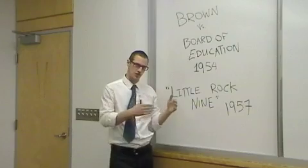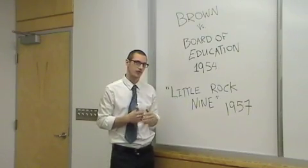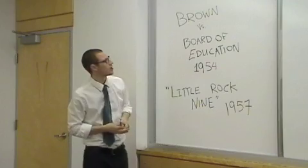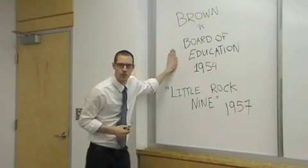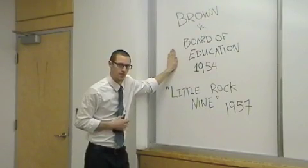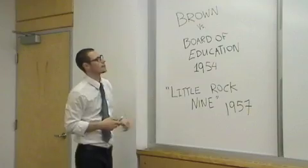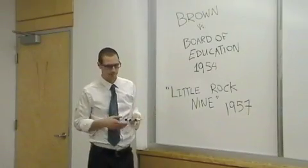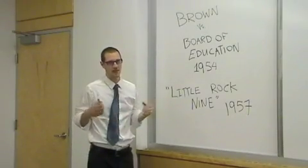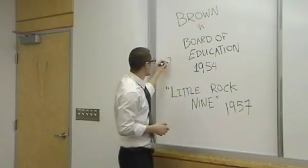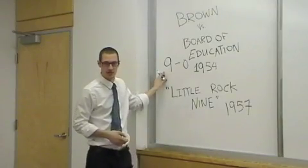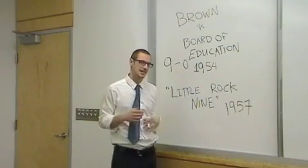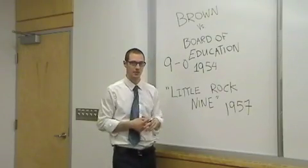In the United States Constitution, which is the founding document of America, the 14th Amendment — the 14th change to the document — said that blacks are citizens just like whites. So what this case really did was look at: if blacks are the same as whites in terms of citizenship, why are they treated so differently? And so in 1954, in a landmark case — landmark meaning that it had huge effects — the Supreme Court ruled 9 to 0, meaning that 9 justices said yes and 0 said no, that schools should be desegregated. Desegregated means that blacks and whites can attend the same schools.